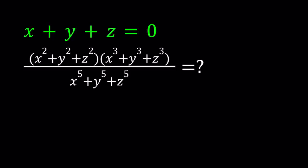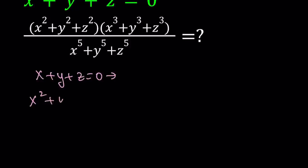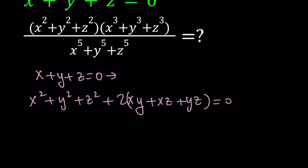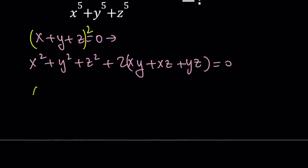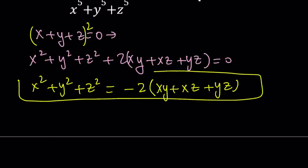I'm going to be doing a lot of algebraic manipulations. If x plus y plus z is equal to 0, I'm going to square both sides of this. That gives us x squared plus y squared plus z squared plus 2 times the quantity xy plus xz plus yz, is equal to 0. So we can isolate x squared plus y squared plus z squared, and that equals negative 2 times xy plus xz plus yz. This is something we're going to be using later.